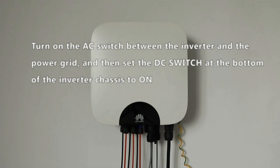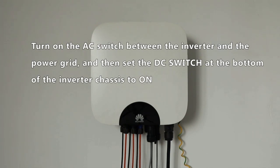Turn on the AC switch between the inverter and the power grid and then set the DC switch at the bottom of the inverter chassis to ON.